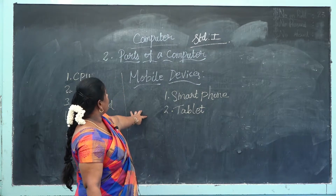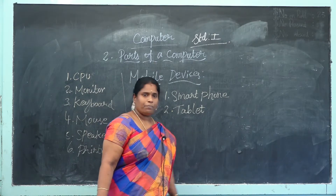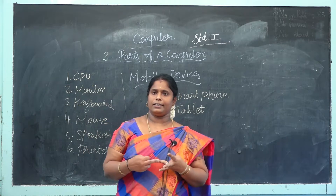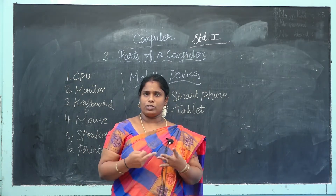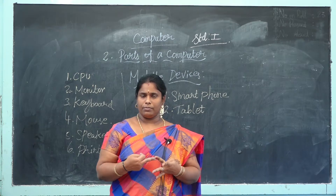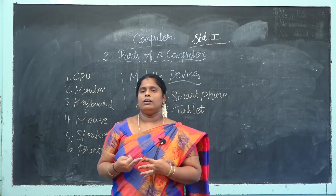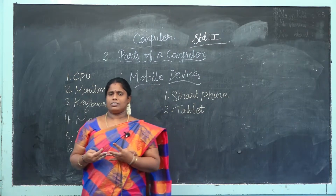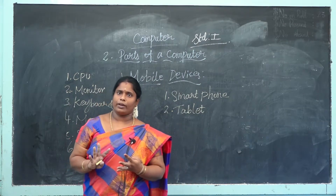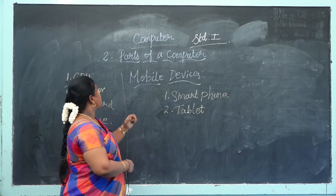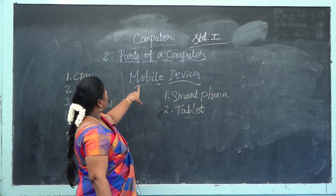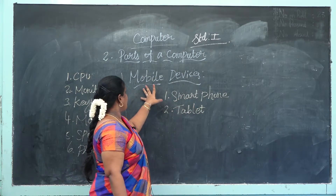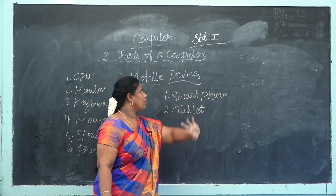What are the main uses of mobile devices? Drawing pictures, writing a letter, watching movies, listening to music, ordering food, booking a taxi, and so on. Now we have to learn what are the parts of the mobile devices.